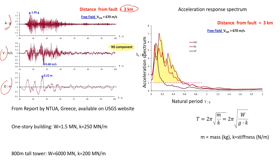It was recorded in the north-south direction. The peak ground acceleration was extremely high at 1.95g, velocity was 0.68 meters per second, and it produced a displacement of 22 centimeters — very, very high values. All this data was collected from recent reports presented by NTUA in Greece, and this report is freely available on their website.